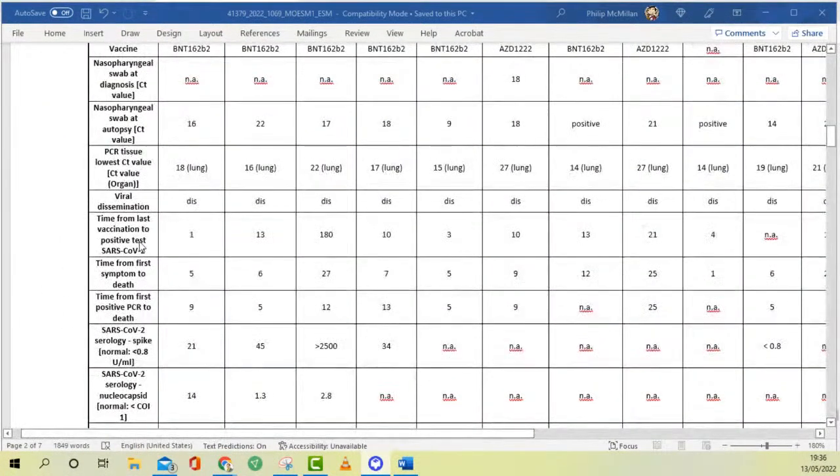Time from last vaccination to the positive SARS-CoV-2 test. In this person it was one day, in this person it was 13 days, this was 180 days in this person. That just gives us a timeframe for when they started the symptoms. And the time from first symptom to death, this is important because it gives us an idea as to how quickly the patient deteriorated. And this is close for first positive PCR to death.